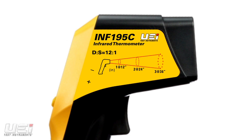This is the distance from an object in relationship to the size of the spot being measured. For example, from 12 inches away, the measured spot is 1 inch. From 24 inches, the spot is 2 inches, and so on.